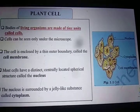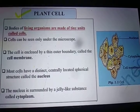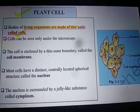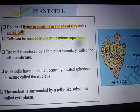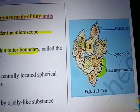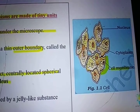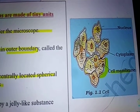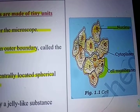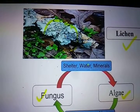Before completing this chapter, let's take a look at the plant cell. All living organisms are made up of tiny units called cells, which can only be seen under a microscope. The cell is enclosed by a thin outer boundary called the cell membrane. Most cells have a distinct, centrally located spherical structure called the nucleus. Outside the nucleus is a jelly-like substance called cytoplasm.